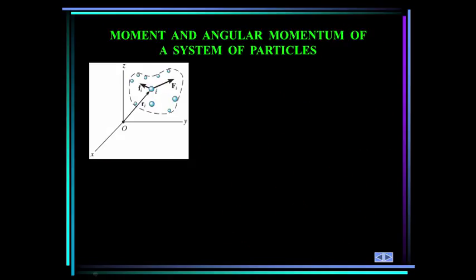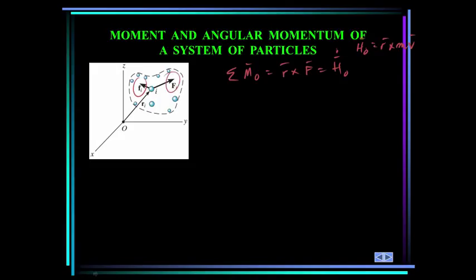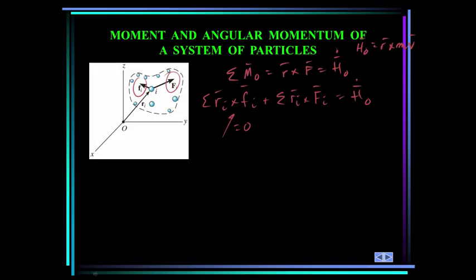What happens when we have a system of particles? The summation of moments about O equals R cross F, which equals the time rate of change of the angular momentum, where angular momentum is R cross MV. In a system of particles, we have internal forces F-sub-i and external forces. When we sum the moments, it's the sum of R-sub-i cross the internal forces plus the summation of R-sub-i cross the external forces. The internal forces term is zero because they occur in equal and opposite pairs. So for a system of particles, the summation of moments about a fixed point equals the time rate of change of the angular momentum.